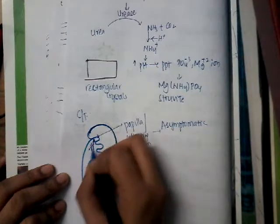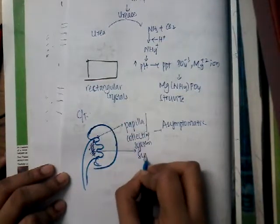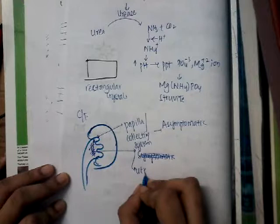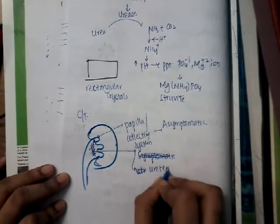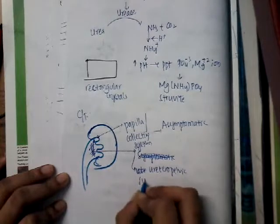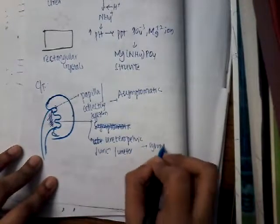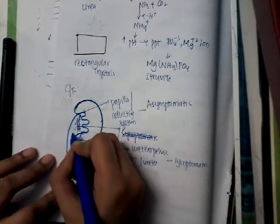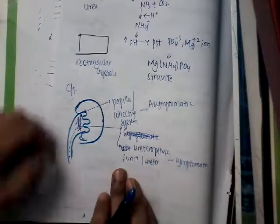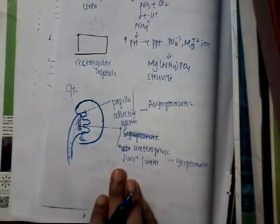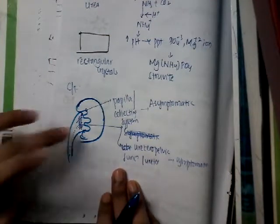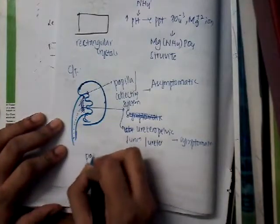Once the stone reaches the ureter or ureteropelvic junction, the stone gradually comes down. If the stone is very small, it can easily traverse without any symptoms. If it is a larger stone, it can cause pain and bleeding.